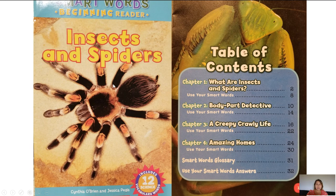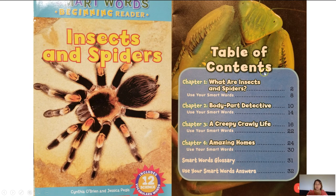Let's go ahead and get started with our book. The title is Insects and Spiders by Cynthia O'Brien and Jessica Pegas. Here's our table of contents: chapter 1, Insects and Spiders, starting on page 2; chapter 2, Body Part Detective, starting on page 10; chapter 3, A Creepy Crawly Life, starting on page 16; chapter 4, Amazing Homes, starting on page 24; and our smart words glossary on page 31. Today boys and girls we will be focusing on chapter 1, What Are Insects and Spiders, starting on page 2.